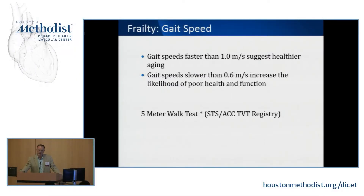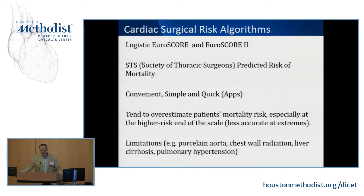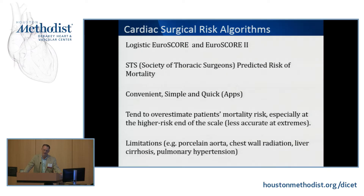Another frailty evaluation is gait speed — speeds faster than a meter per second suggest healthier aging, while gait speed less than 0.6 meters per second suggests TAVR is unlikely to benefit that patient. Several cardiac risk scores — the Logistic EuroSCORE, EuroSCORE 2, and the Society of Thoracic Surgeons score — are designed for surgical aortic valve replacement but have been applied to TAVR studies for high-level risk assessment. They're simple, available as apps, and included in every consult note.